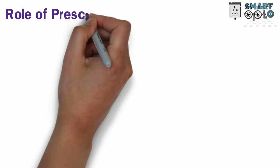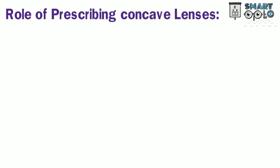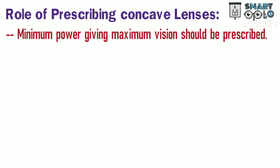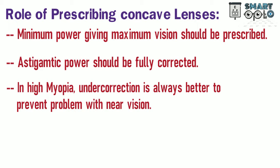Rules for prescribing concave lenses: The minimum power giving maximum vision should be prescribed. Astigmatic power should be fully corrected. In high myopia, undercorrection is always better to prevent problems with near vision.